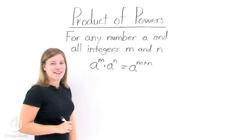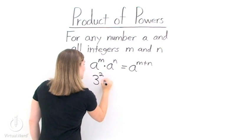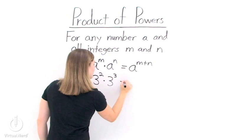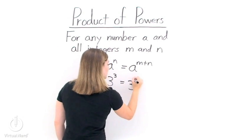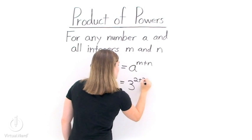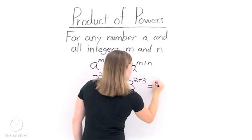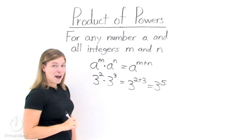Let's do a couple examples. 3 squared times 3 cubed. Using the product of powers, we can just put a 3 and then add our exponents 2 and 3 together. This gives us an answer of 3 to the fifth power.